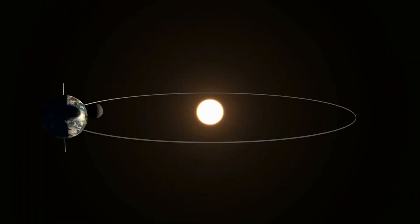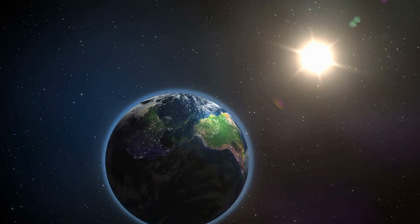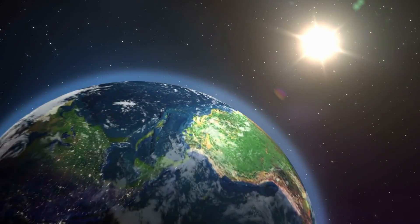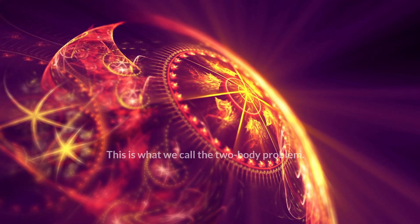Consider this: the Earth is not just being pulled towards the Sun, but also moving forward. This forward motion, or tangential velocity, makes the Earth want to travel in a straight line. But the Sun's gravitational pull bends this straight path into an orbit, creating a delicate balance that keeps the Earth from hurtling into the Sun or drifting off into space.